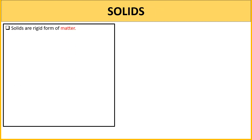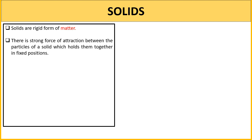Solids are basically a rigid form of matter. Matter in the solid state is very rigid — rigid means it has a fixed shape and we cannot easily change that shape. Like your laptop — can you change its shape? No. If we want to change the shape, it will break or be damaged. Solids are rigid because the force of attraction between their particles is very strong.